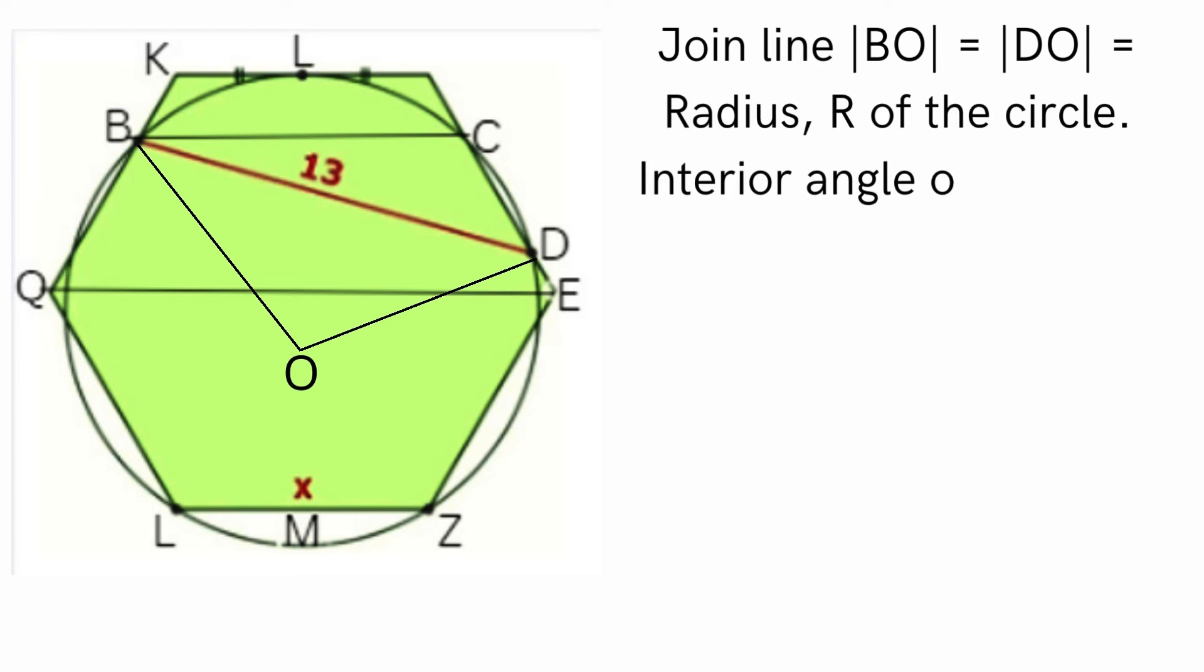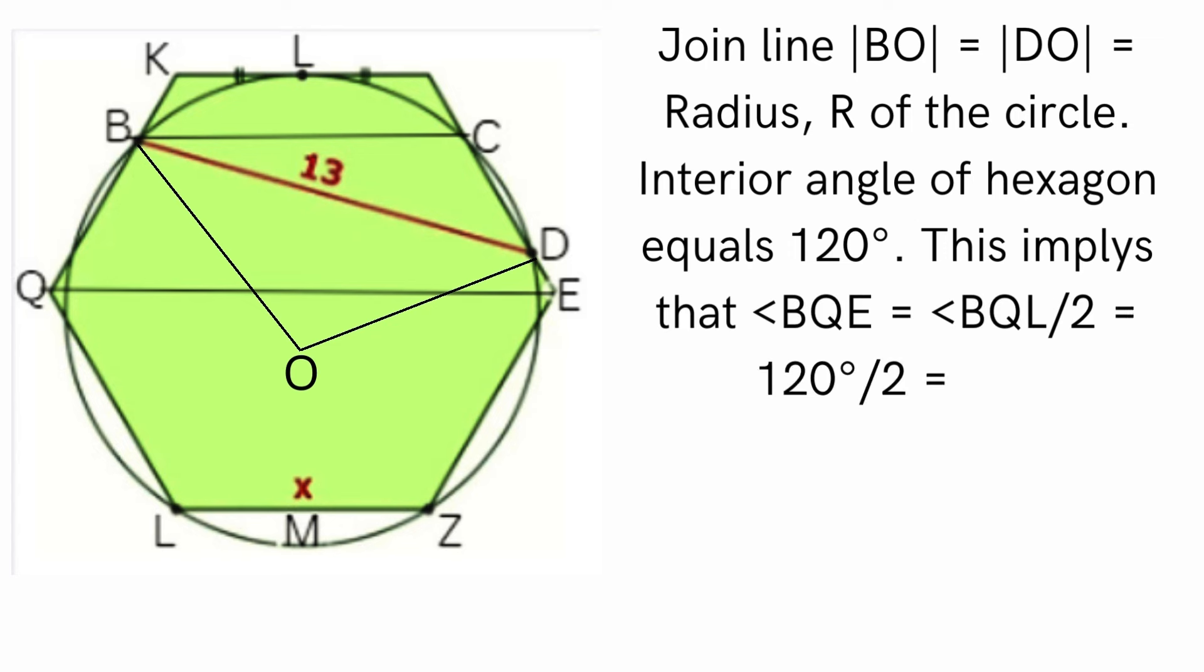Interior angle of hexagon equals 120 degrees. This implies that angle BQE equals angle BQL divided by 2 equals 120 degrees divided by 2 equals 60 degrees.